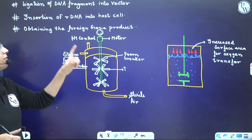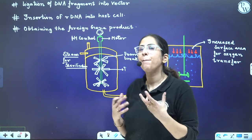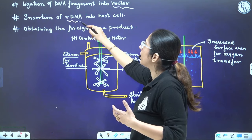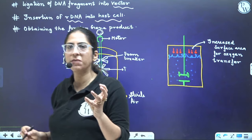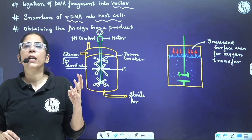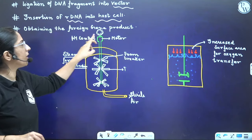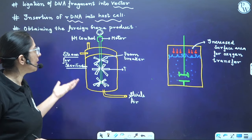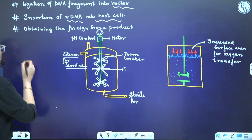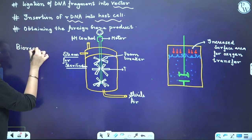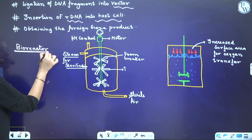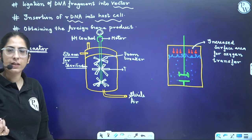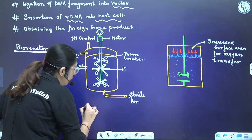Next we ligate the fragment into the vector. We have the DNA, amplified it into millions of copies, and now insert it into the vector. This recombinant DNA is then inserted into the host cell using calcium chloride method or heat shock method. Next is obtaining the foreign gene product. For that, we require a bioreactor or biofermenter. Transformation was done in only a few cells, but we want multiple copies — so we culture our recombinant cells in a bioreactor. There are two types given in NCERT: stirred tank bioreactor and sparged tank bioreactor.